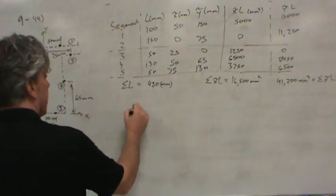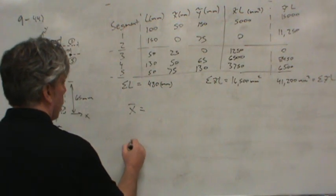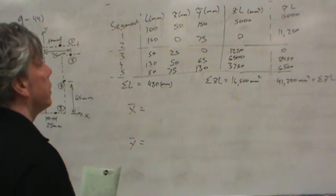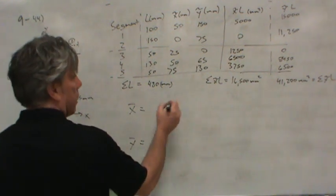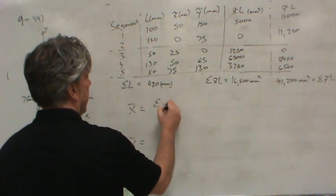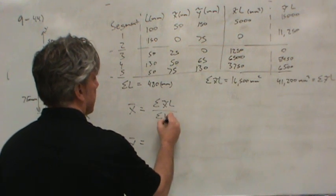Now to get the location of the centroid, x-bar, y-bar, what we need to do is take the sum of the x-tilde L's and divide it by the sum of the lengths.